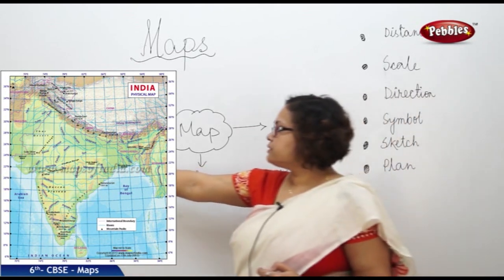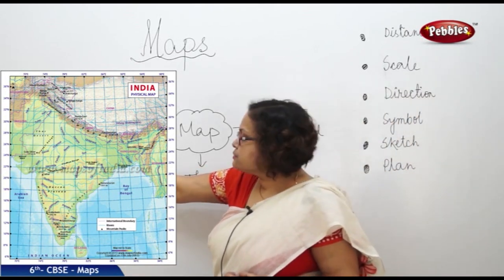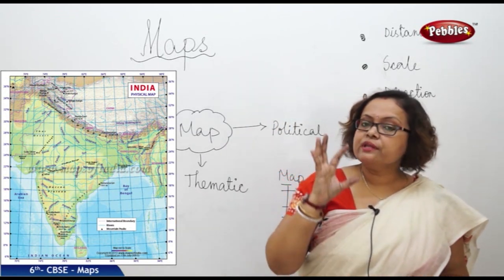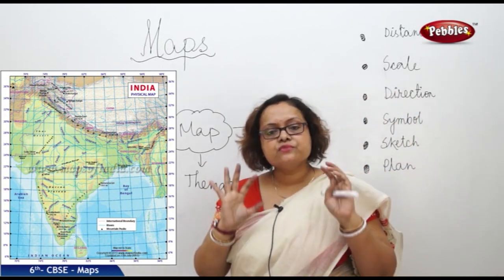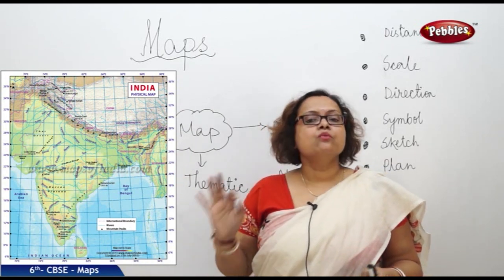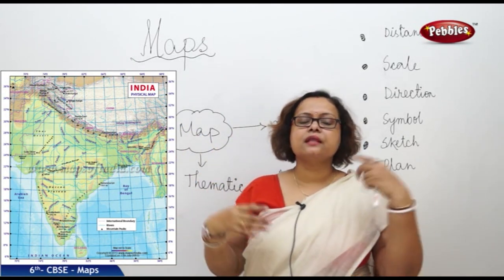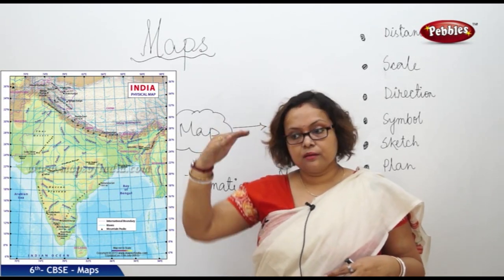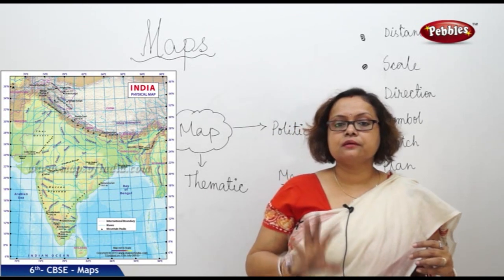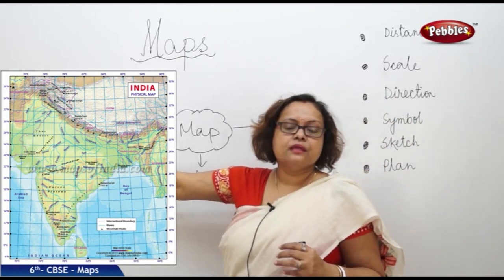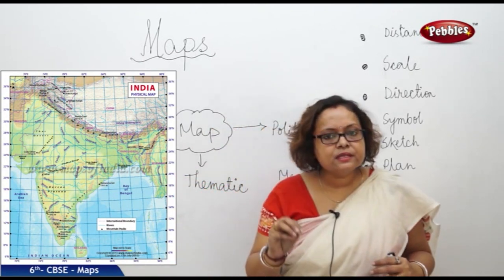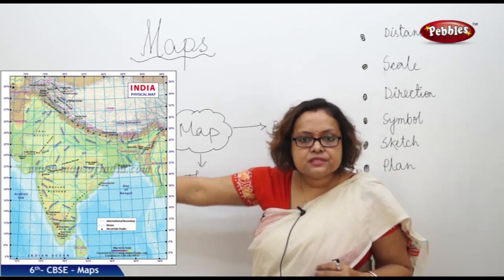The first type is the physical map, also called the relief map. These maps show the physical features of the world — it can be mountains, it can be rivers. For example, a physical map of India will show the Himalayan mountains in the north, rivers like Ganga, Yamuna, Indus, and Brahmaputra in the northern plains, and then Godavari, Krishna, Kaveri, the Western Ghats, Eastern Ghats — all these relief features are shown. We also call it a relief map because natural features are displayed.